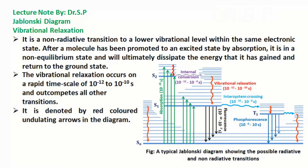Vibrational relaxation is a non-radiative transition to a lower vibrational level within the same electronic state. After a molecule has been promoted to an excited state by absorption, it is in a non-equilibrium state and will ultimately dissipate the energy it has gained and return to the ground state. Vibrational relaxation occurs on a rapid timescale of 10 to the power minus 12 to 10 to the power minus 10 seconds, outcompeting all other transitions. It is denoted by red colored undulating arrows in the diagram.